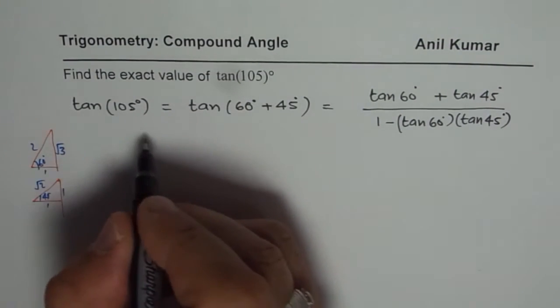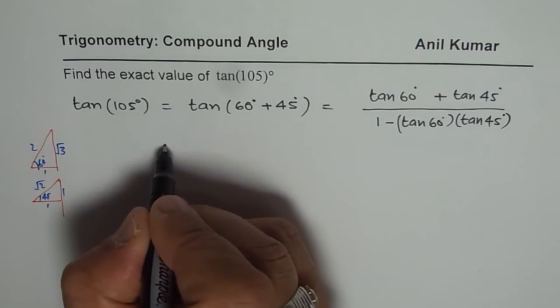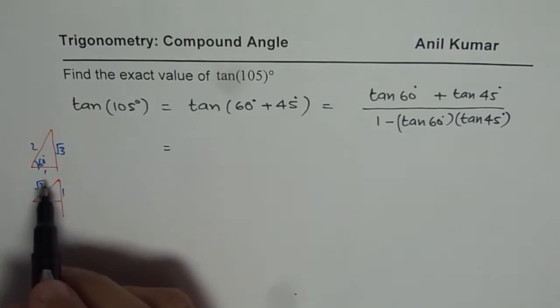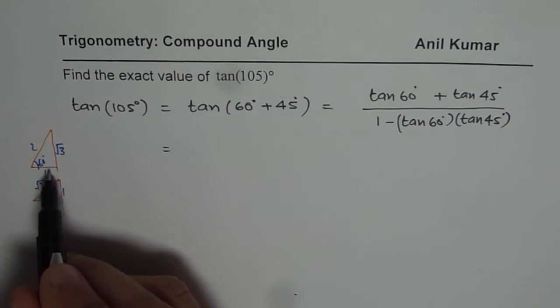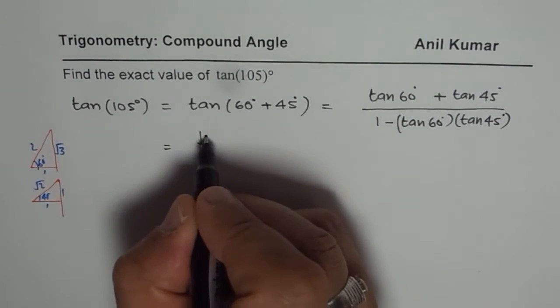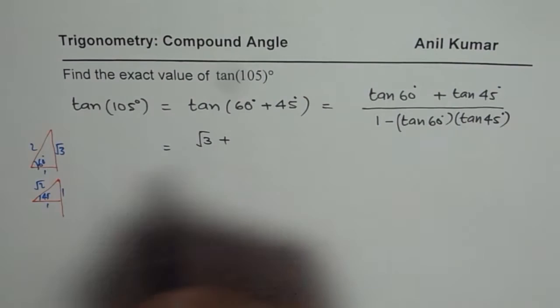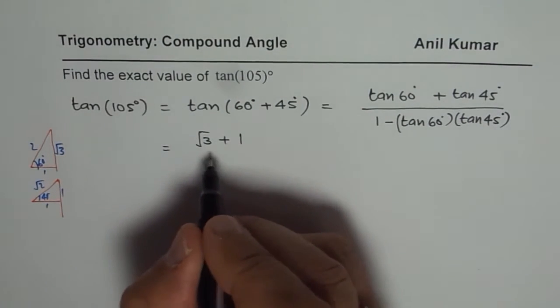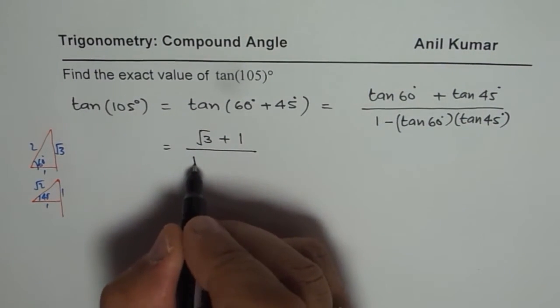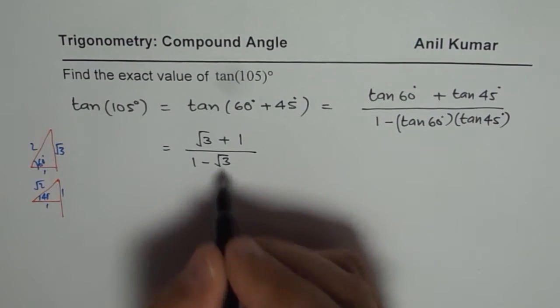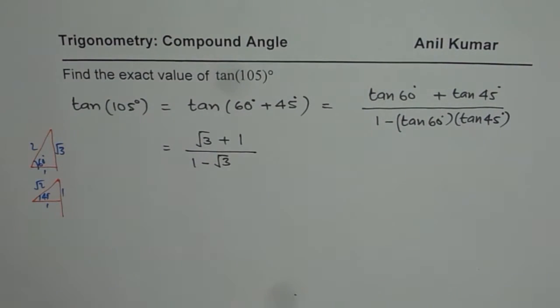So we know tan of 105 degrees could now be written as tan 60. 60 is opposite over adjacent side, square root 3. So we can write square root 3 plus tan of 45 is just 1. Divided by 1 minus square root 3 times 1, which is square root 3.